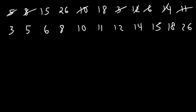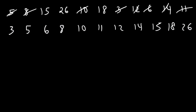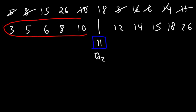Now the next thing you want to do is identify the median of the entire data set. The median is basically the middle number. If we eliminate the first two numbers on both sides and follow that process until we get one number in the middle — so 11 is the median, the second quartile. Now let's identify the median of the lower half of the data. The middle number of these five numbers is 6, so 6 is going to be Q1, the first quartile.